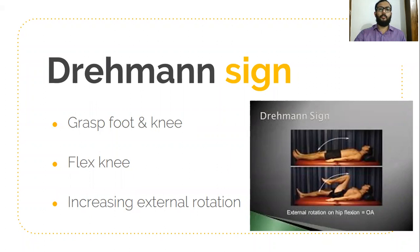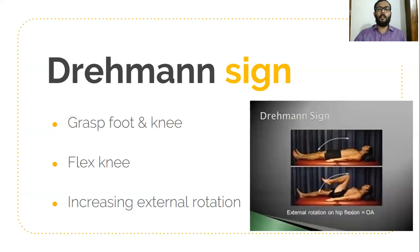Coming to the clinical examination of hip joint, this is Drumann's sign, in which we are doing flexion of hip and knee. Whenever we do the flexion of hip and knee, there is an increasing external rotation, which is suggestive of a pathological disorder of the hip. Just like the please scratch test of the shoulder joint, we can do Drumann's sign in the hip joint to check whether there is any pathology related to the hip joint.